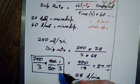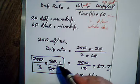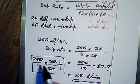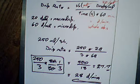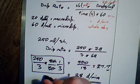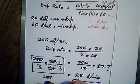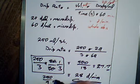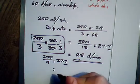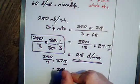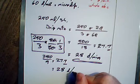It works out just as easy to do it this way by having it 250 over three by one on three. That would come down to 250 on nine equals 27.7 recurring, equals 28 drops per minute.